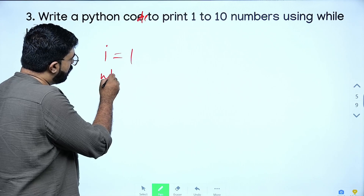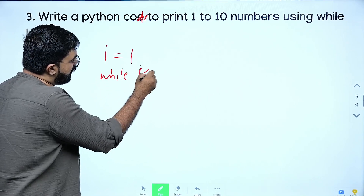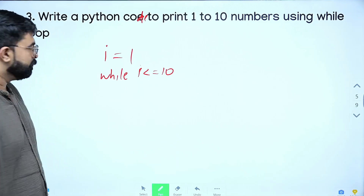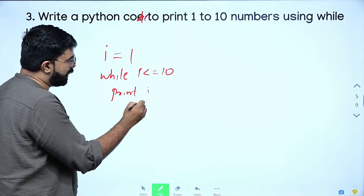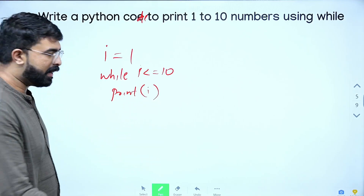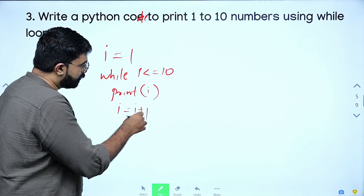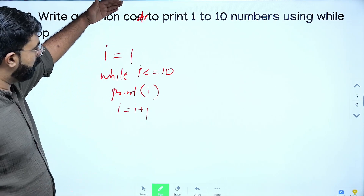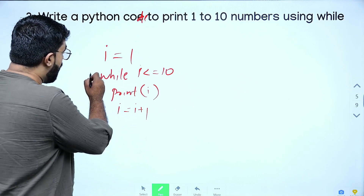Then: while i is less than or equal to 10, print i, then i = i + 1. Let's click and run through it: 1, 2, 3, 4, 5.